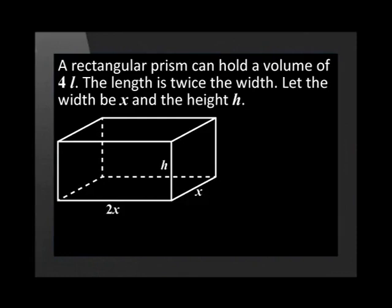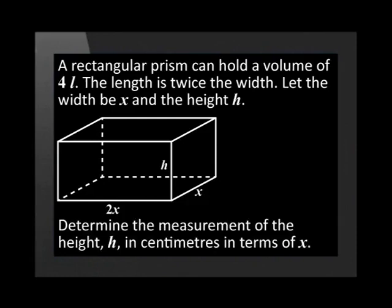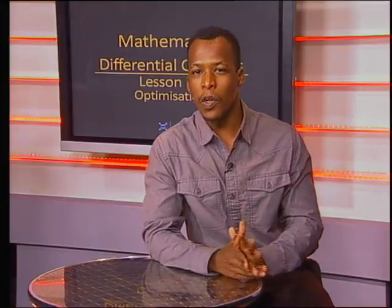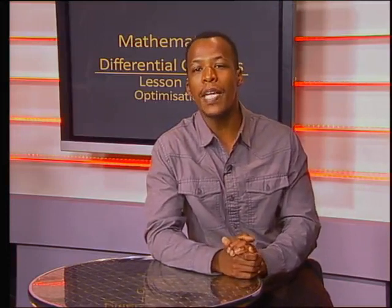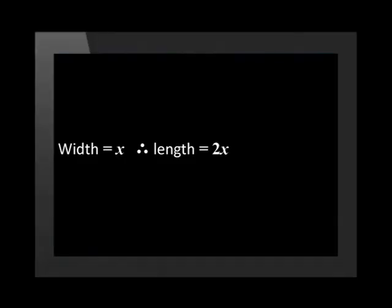Let's dive into these problems now. A rectangular prism can hold a volume of 4 liters. The length is twice the width. Let the width be x and the height h. Determine the measurement of the height h in centimeters in terms of x. When a question asks us to determine the value of a variable in terms of another variable, it means that there will be a variable in the answer. If the length is twice the width and the width is x, then the length is equal to 2x.